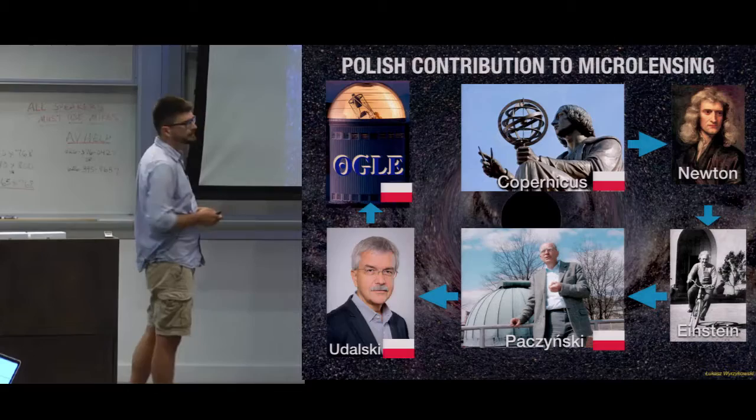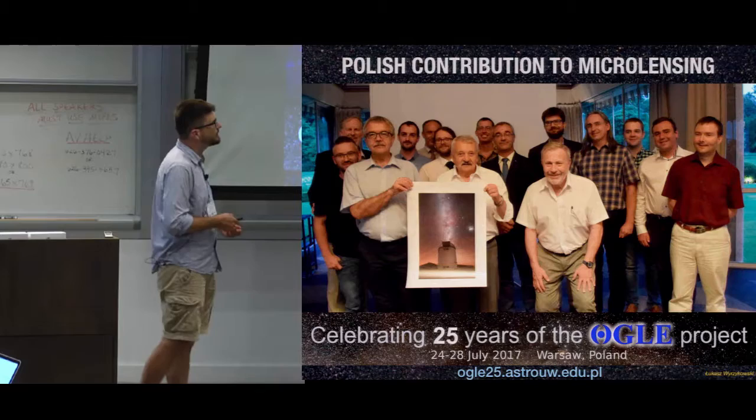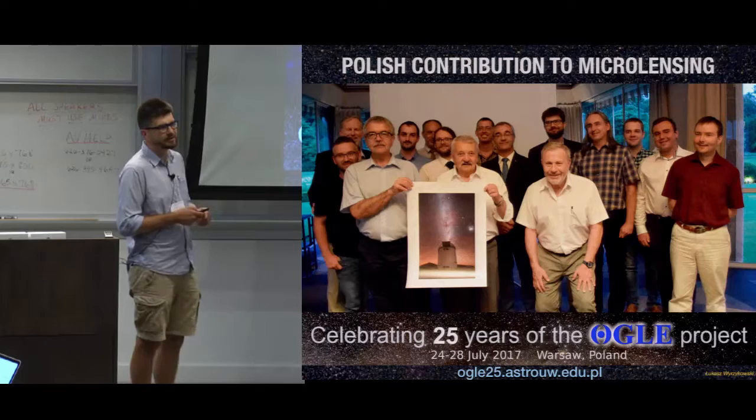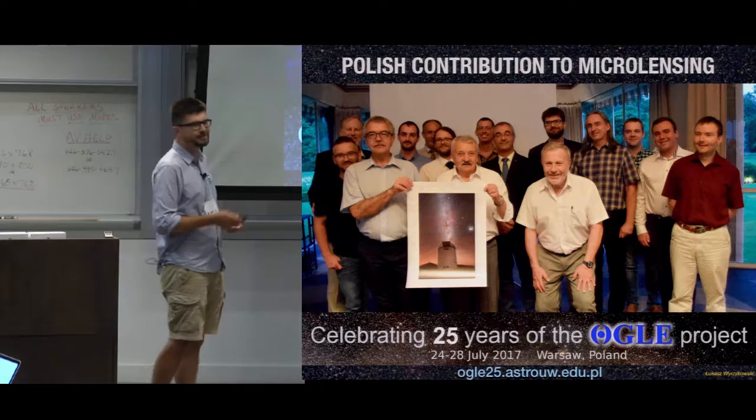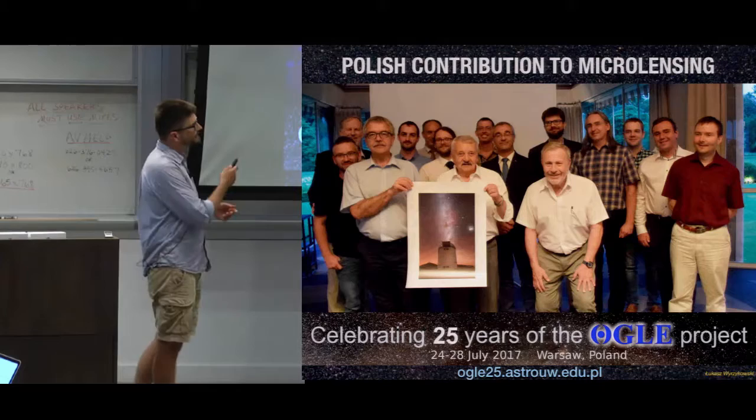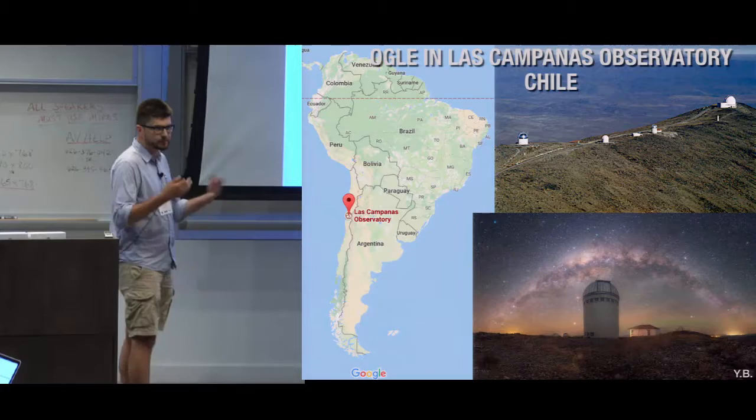And this is the OGLE team, a picture taken a few weeks ago. We celebrate the 25th anniversary of the whole project. This is a very unique picture because on one picture you can see all members of the OGLE team in one place. Normally, there is always someone observing at the telescope. Unfortunately, Chris Ribitsky was observing at the time so that the whole OGLE could gather in Warsaw. This is a historical picture taken a few weeks ago in Warsaw.